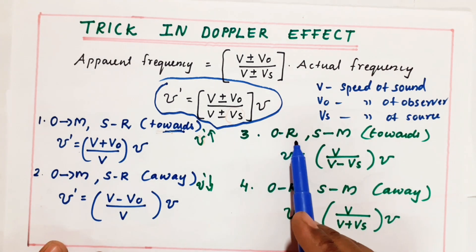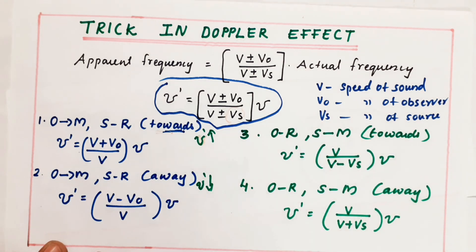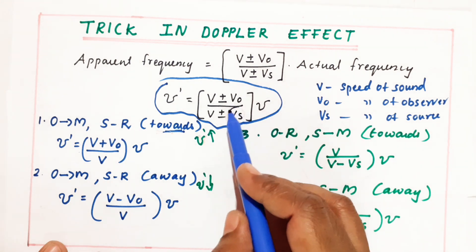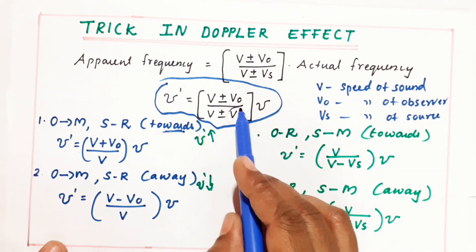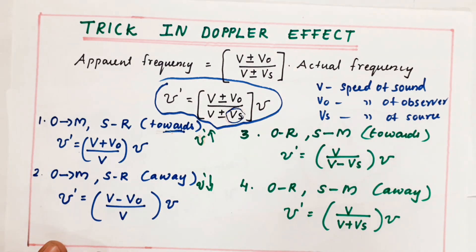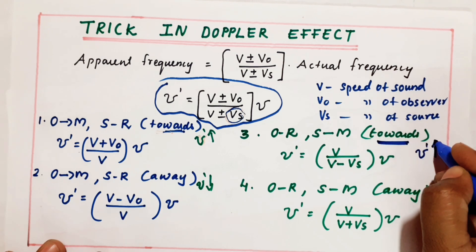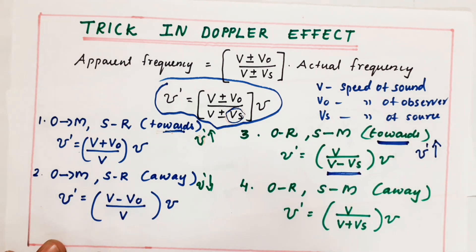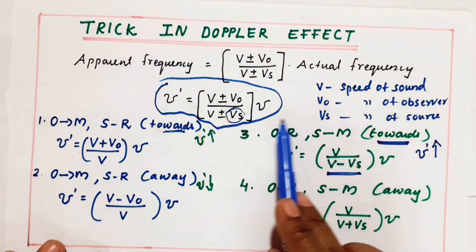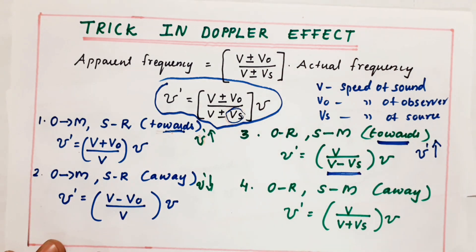Now the reverse case: observer at rest, source is moving towards the observer. Since observer is at rest, the V_O term is not in the numerator — we have only V. Source term is in the denominator. Since it is moving towards, frequency should increase, so the denominator should connect with a minus sign: V by V minus V_S, into nu.